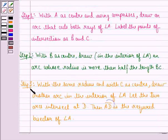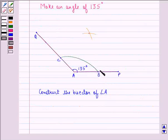Step 3 is: with the same radius and with C as center, draw another arc in the interior of angle A. Let the two arcs intersect at D, then line segment AD is the required bisector of angle A. So, like this, with B as center, then C as center, we draw these two arcs. Let the point of intersection of these two arcs be D. Now, we have to join A to D.